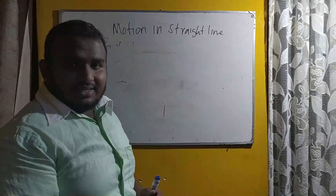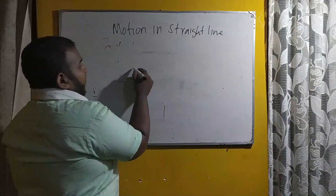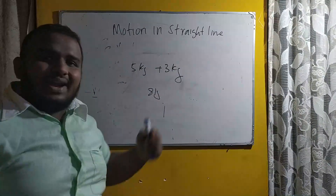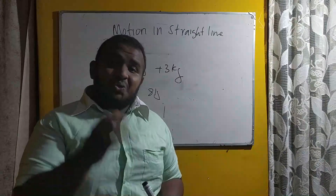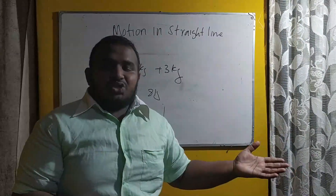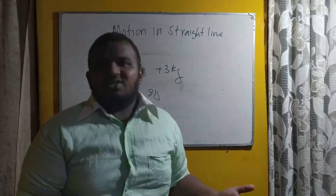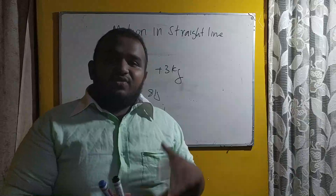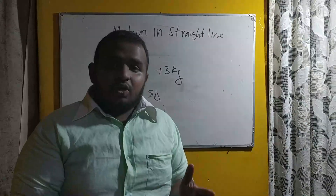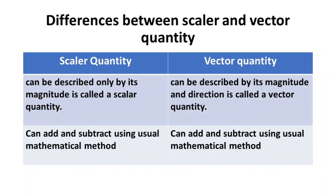But in scalar quantities, normal addition is possible. For example, if I ask you what is the sum of 5 kg and 3 kg, you will answer 8 kg — no issues, you can add them. But it is not possible to simply add two vector quantities such as 8 m/s² and 3 m/s² of acceleration. So to summarize: a vector has both direction and magnitude, but a scalar has only magnitude. For vectors, you can't add using the usual mathematical method, but for scalars, you can.